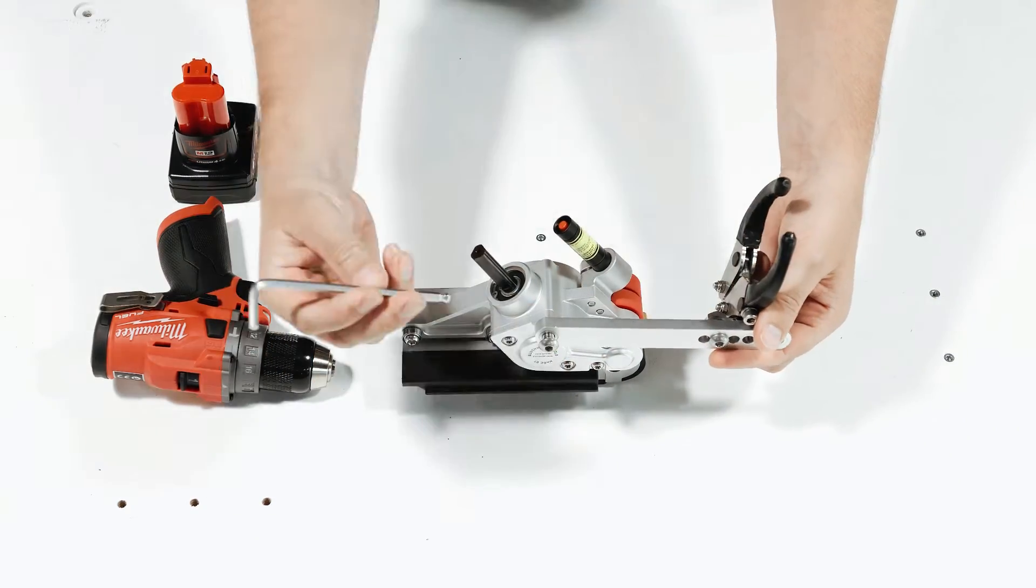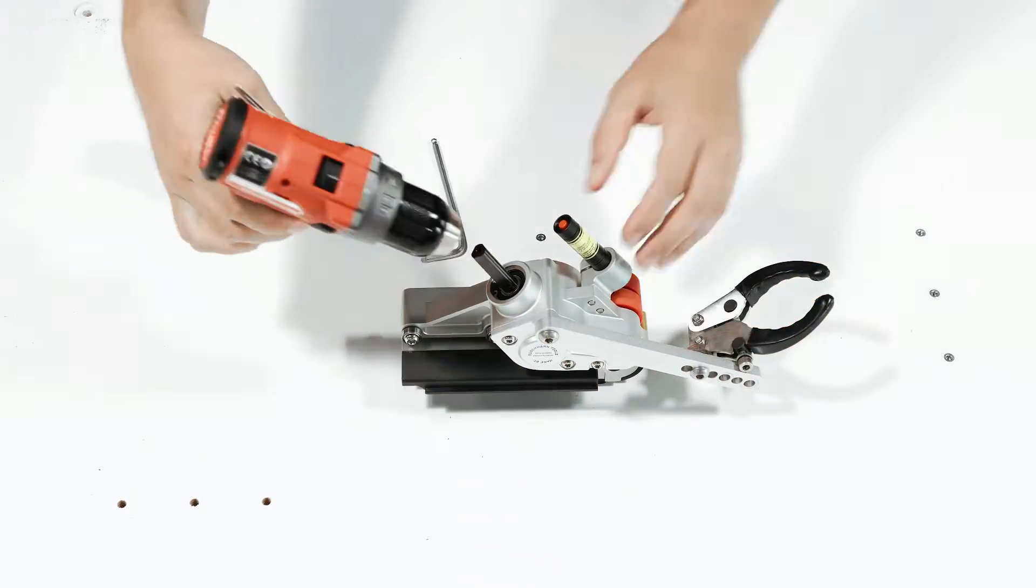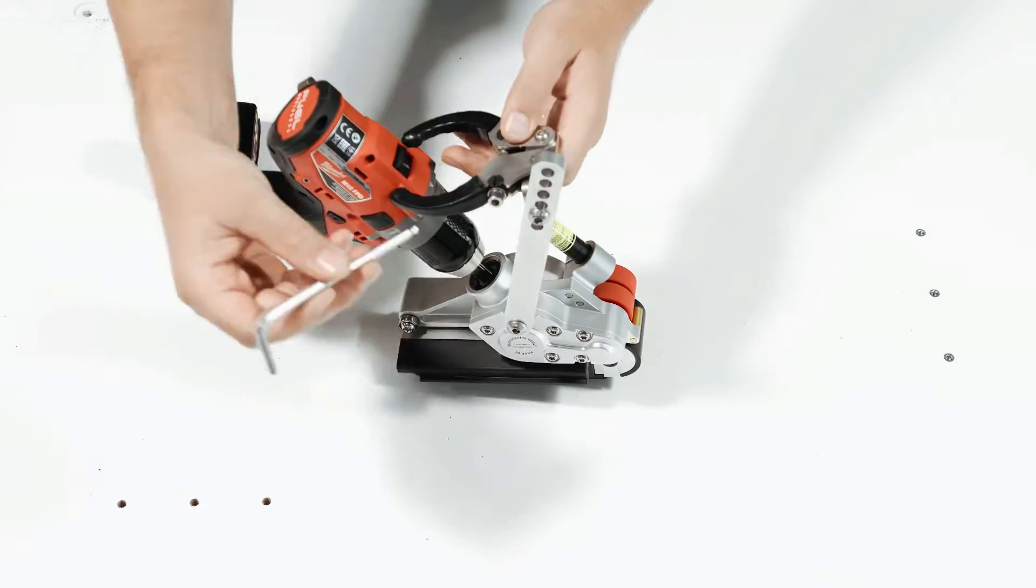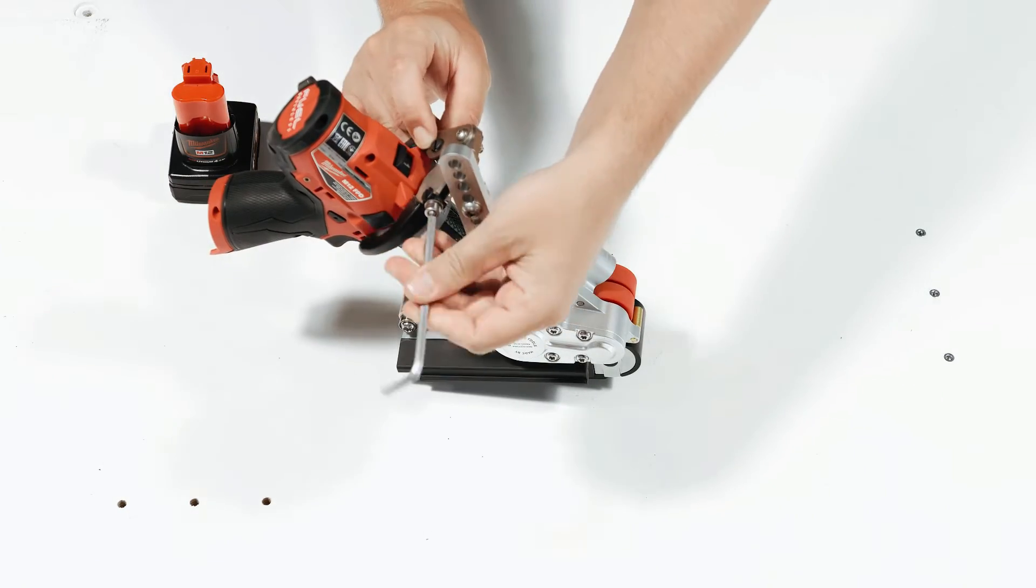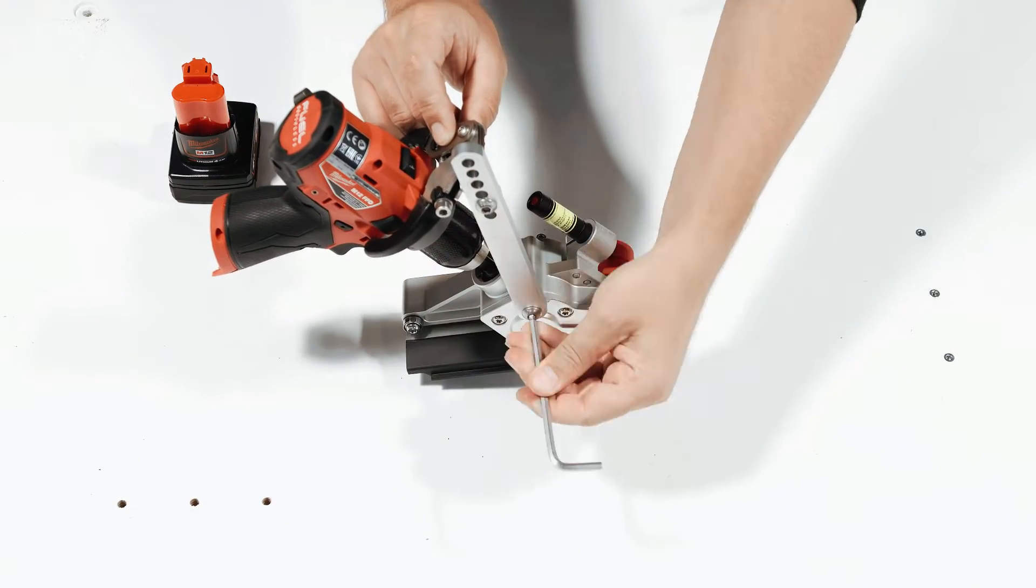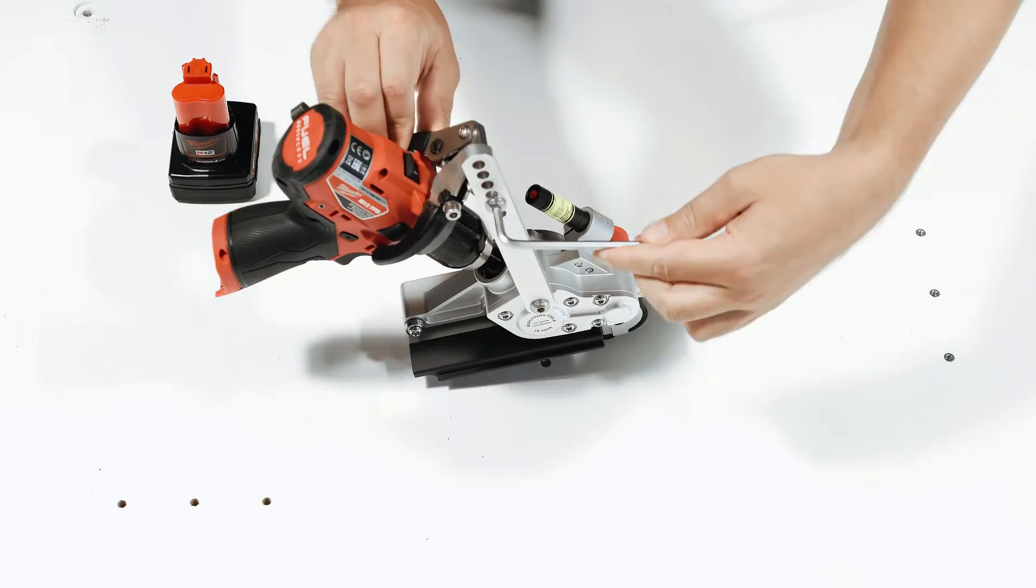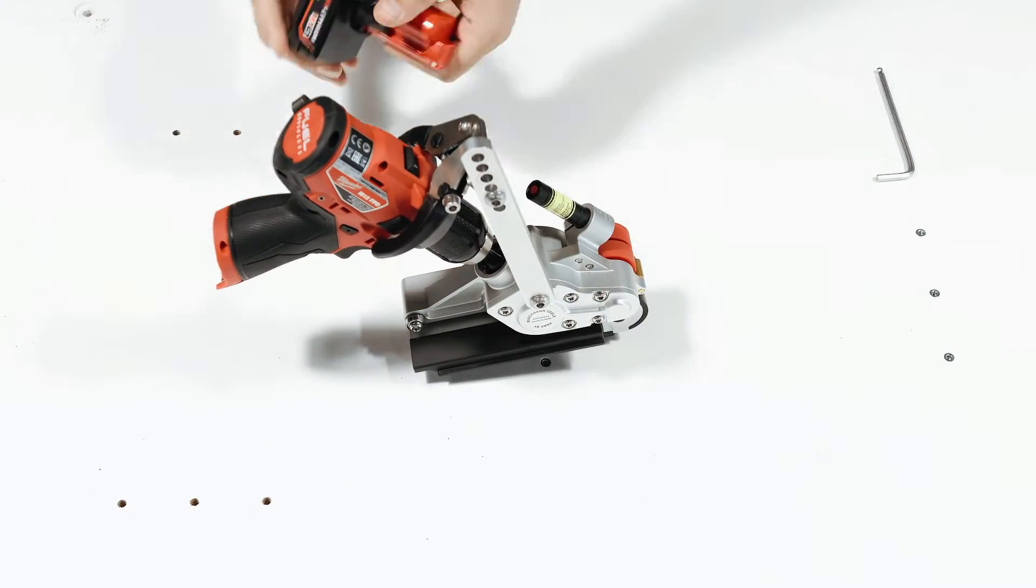Mount the cordless drill on the tool by fixing it to the drive shaft. Align the fixture that holds the drill in place and secure the three bolts using the 5mm allen key. Insert the battery into the cordless drill.